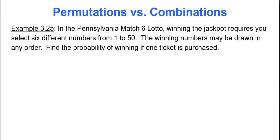Let's talk about the Pennsylvania Match 6 Lotto. So winning the jackpot requires you to select six different numbers from 1 to 50. The winning numbers may be drawn in any order. They may be drawn in any order. Find the probability of winning if one ticket is purchased.